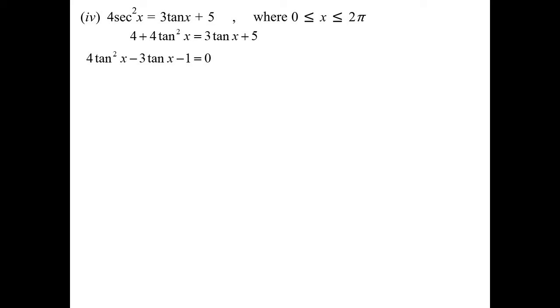What multiplies together to give -4 because we haven't got a monic? That still factorizes nicely, so we get (4tan x + 1)(tan x - 1).